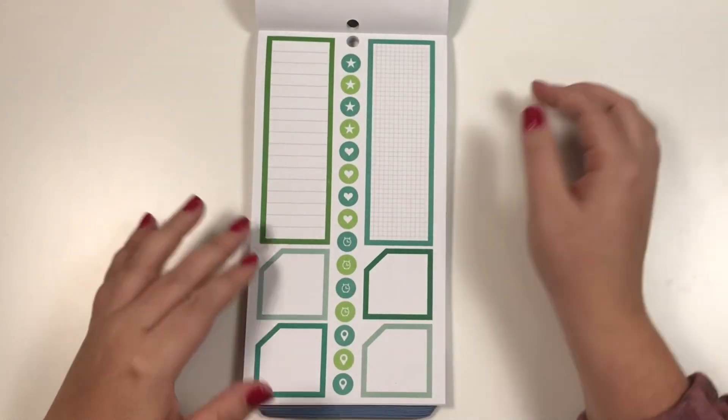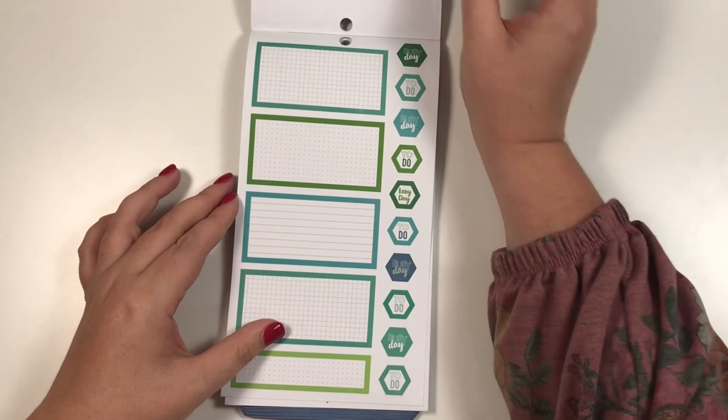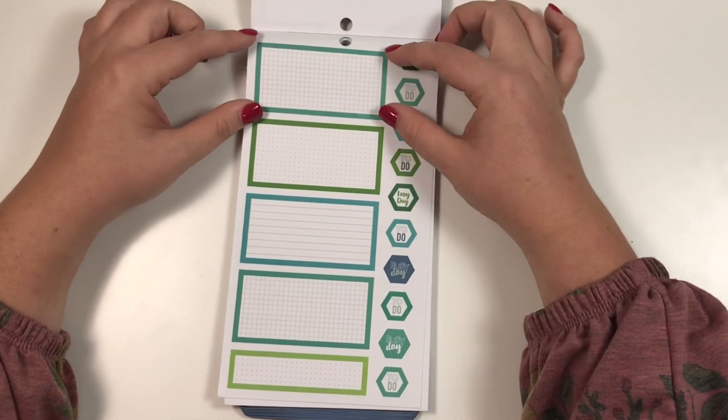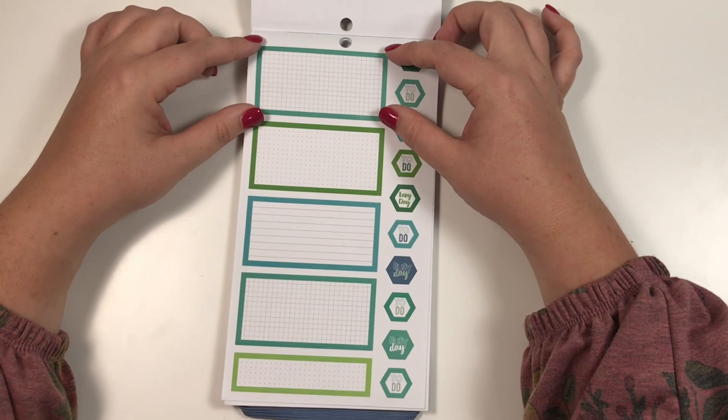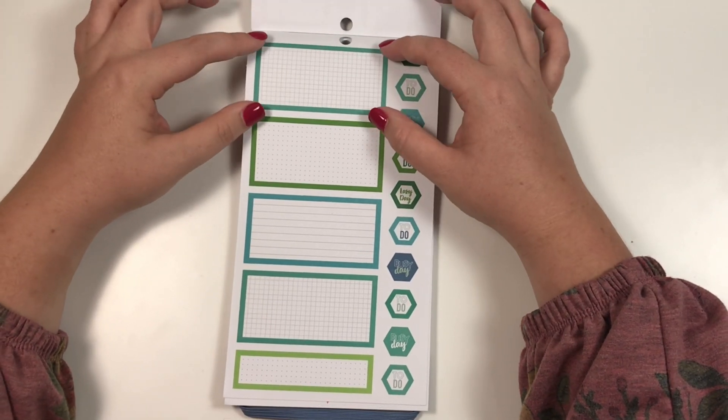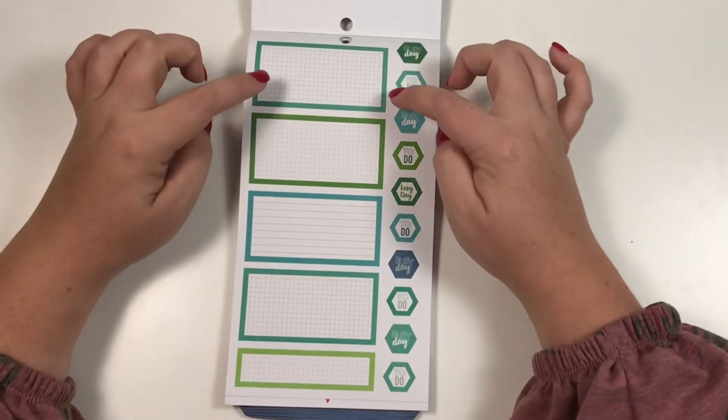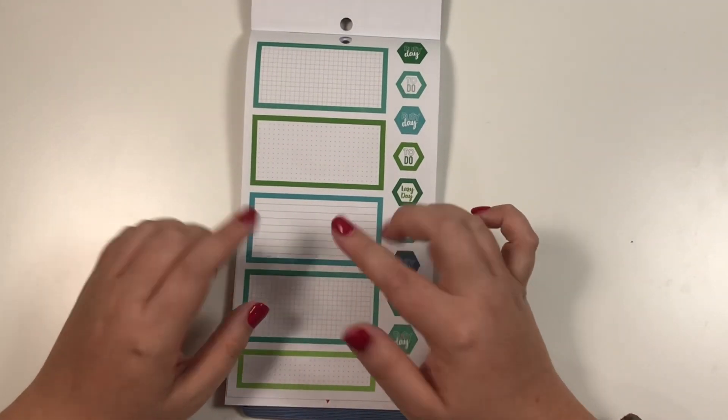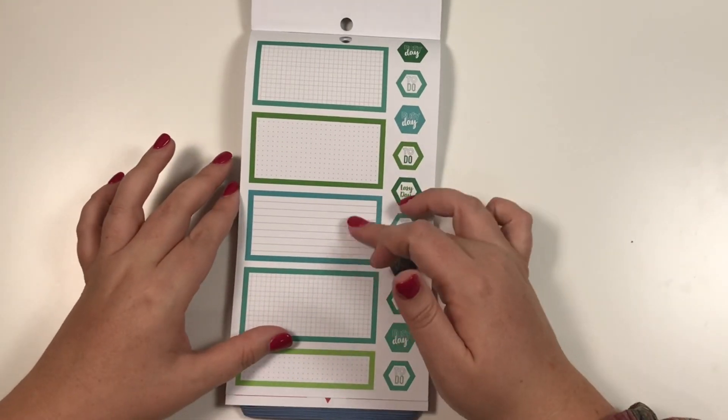But besides that, it's super similar to the first color story, except this one the boxes are turned the other way. In the first color story we had boxes that were pretty much the same size, but they were turned this way. Now in this one, it doesn't really matter—you can still turn it the other way—but the ones that are lined, those kind of matter a little bit more because of the lines.